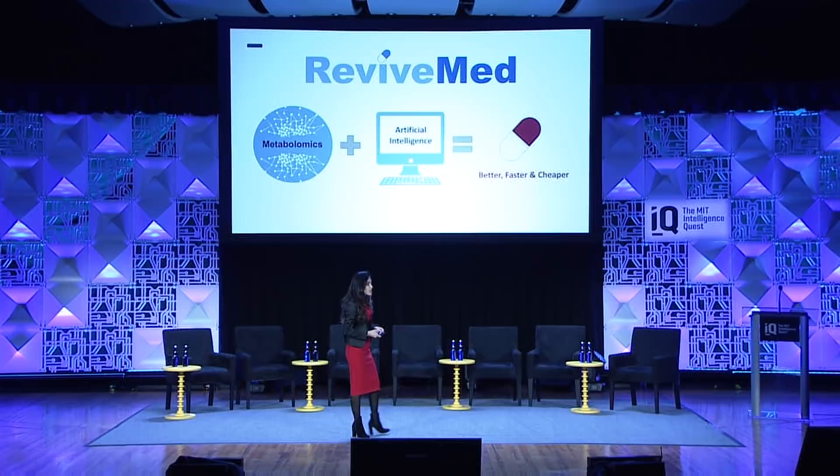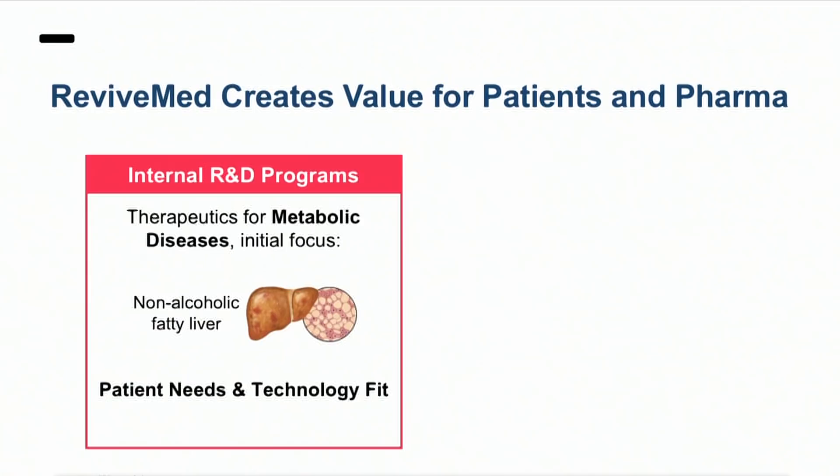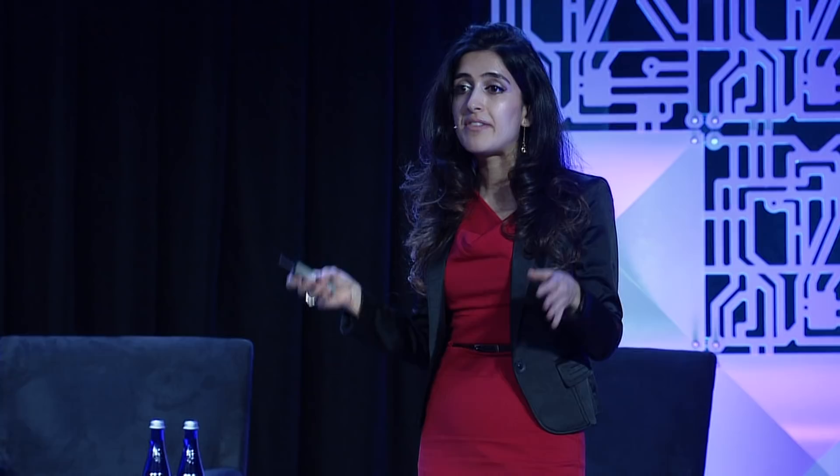By leveraging metabolomics and artificial intelligence, we could discover high clinical efficacy drugs while saving hundreds of millions of dollars and years from discovery to clinic. Currently, we are focused on discovering therapeutics for metabolic diseases, initially focusing on non-alcoholic fatty liver, because there is significant need for patients. Importantly, metabolites play a key role in these diseases, so our technology can create the most impact.